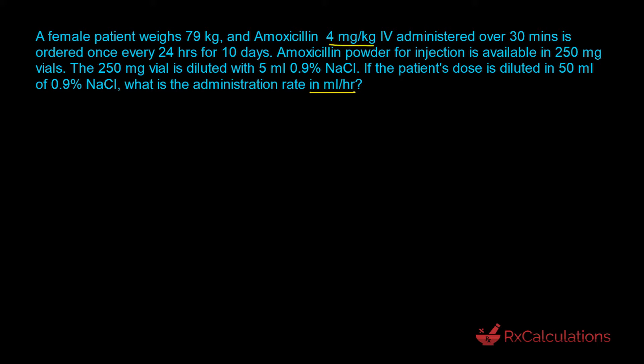We've been given the normalized dose, which is 4 milligrams per kilogram. Depending on the patient's weight, each patient will have a different amount of drug. This patient weighs 79 kilograms, so we'll use that in conjunction with the normalized dose to determine how much amoxicillin this patient would receive. Once we've determined that, we need to transform it into a volume quantity using the information that 250 milligrams is diluted with 5 milliliters of 0.9% sodium chloride, and then make use of the time as well.